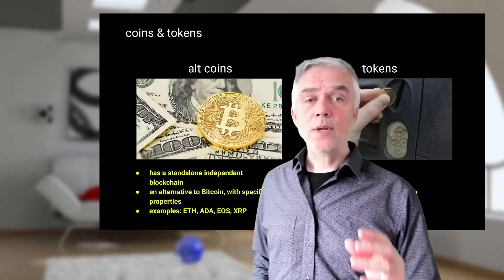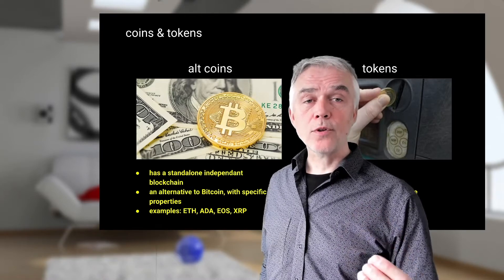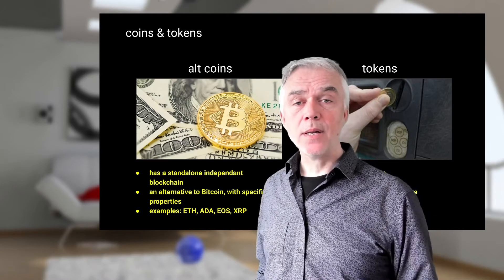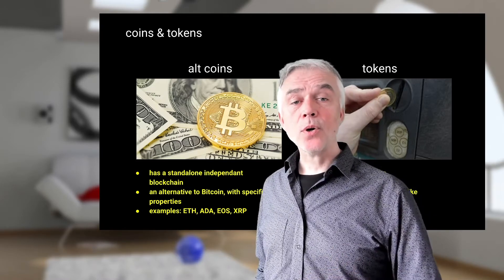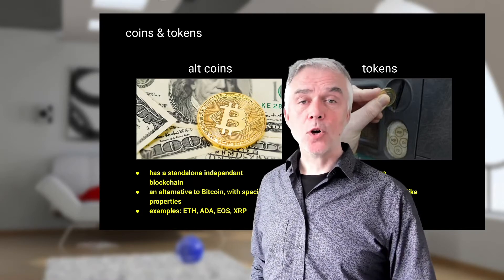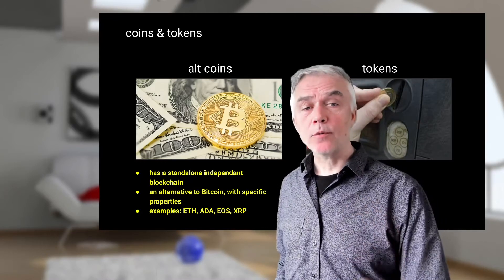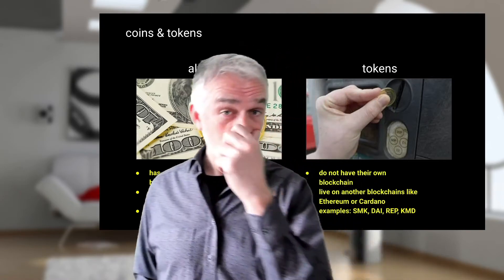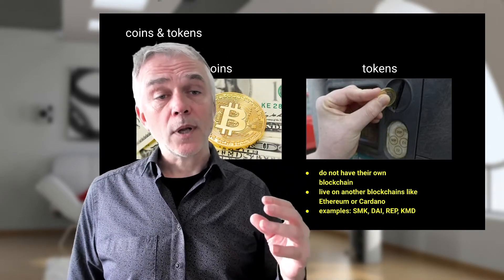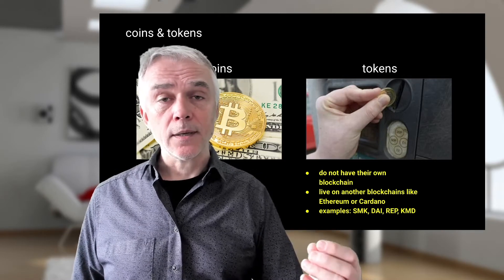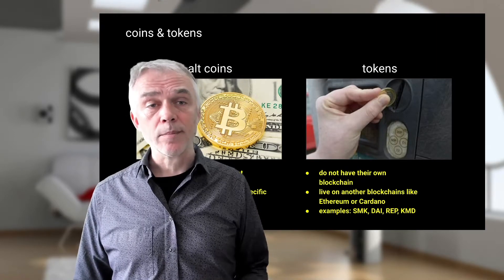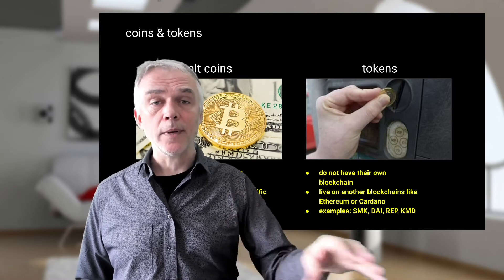Talking about coins and tokens, we often see the term alt tokens — alternative tokens. These tokens are an alternative to the first blockchain, Bitcoin. Bitcoin has its own blockchain network and platform, and these alt tokens also have their own blockchain platforms — often a fork from the Bitcoin open-source code, or built from scratch — like Ethereum, the second largest blockchain, or Cardano or Tron. Tokens, on the other hand, don't have their own blockchain; they live on top of another blockchain such as Ethereum or Cardano. You can create your own token by implementing smart contracts.